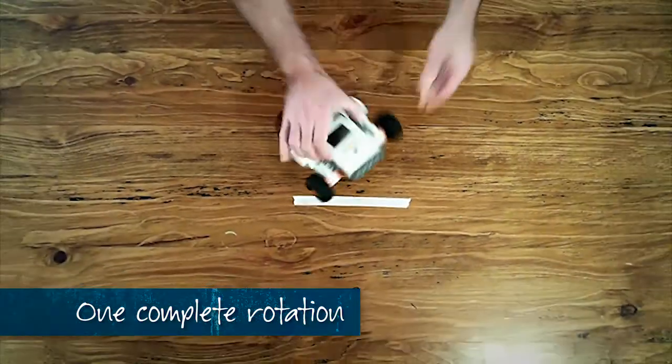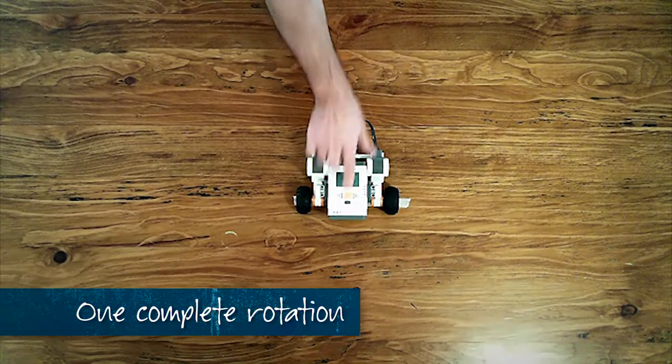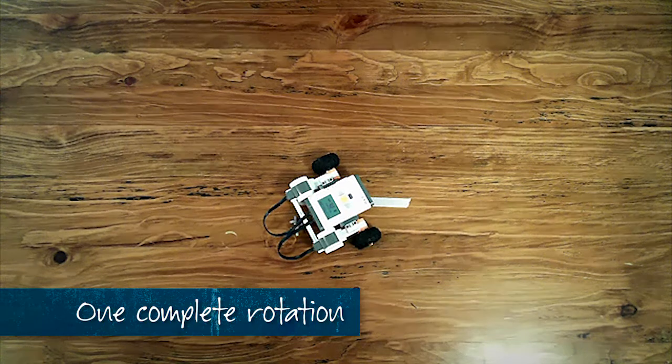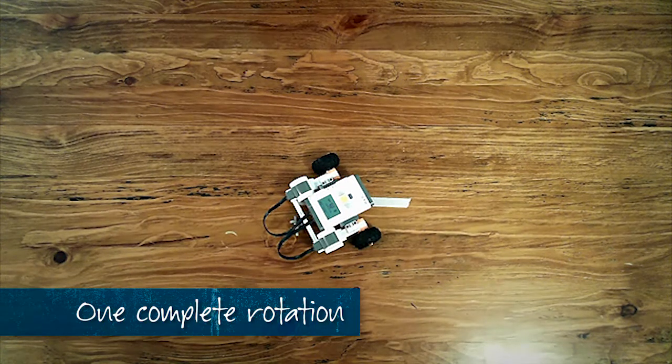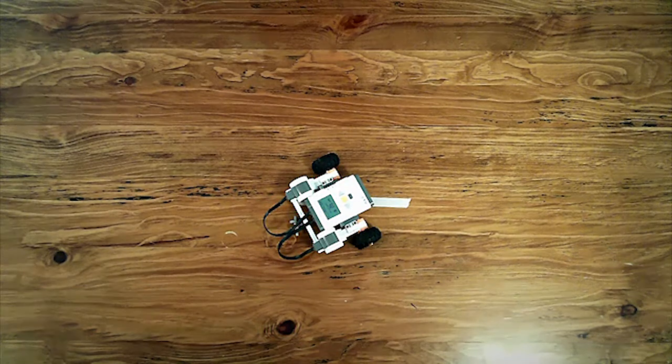But what we find is one rotation of the wheel is not the same as one rotation of the robot. So for this particular robot design, we're going to need more than one wheel rotation. Let's try a few different numbers and see what we come up with.